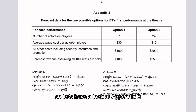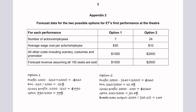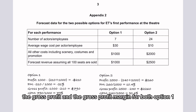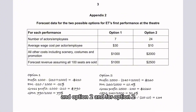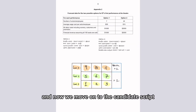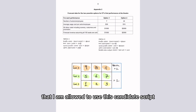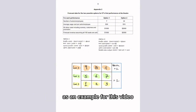So let's have a look at Appendix B for this question. I've calculated everything that I can for option 1 and option 2 — the profit, the profit margin, the gross profit and the gross profit margin for both options. And for option 2, for good measure, I have also calculated the break even output. Now moving on to the candidate script. Please be reminded that I have had written confirmation that I am allowed to use this candidate script as an example for this video.